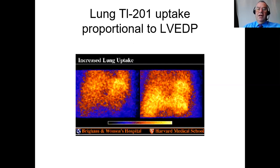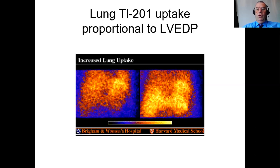Here is a picture of patients with increased lung uptake due to elevated left ventricular end-diastolic pressure. This clears after about an hour. What you do is perform the normal SPECT acquisition and then do an anterior planar for about three minutes, and you'll see any significant lung uptake. This has good prognostic value.